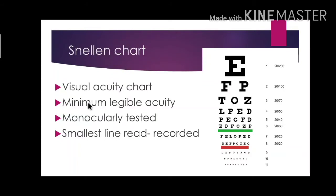The Snellen chart is used to test minimum legible acuity. Minimum legible task is one type of visual acuity classification. It is done when complex patterns such as letters or numerals are used as the test stimulus. To know more about visual acuity and its classification, please watch my previous video on visual acuity.